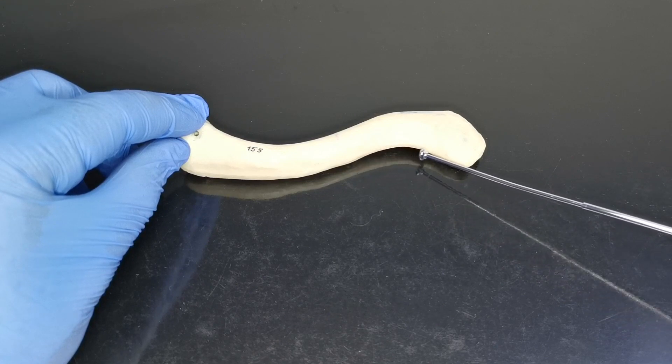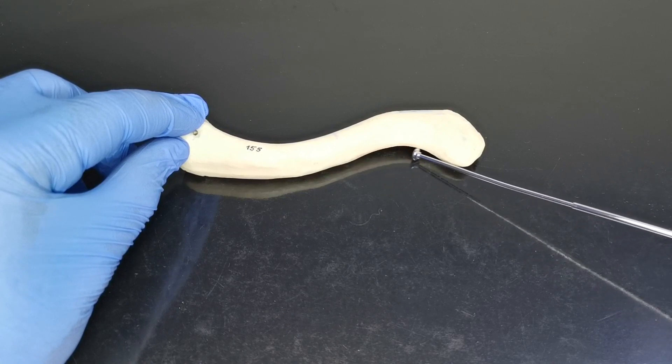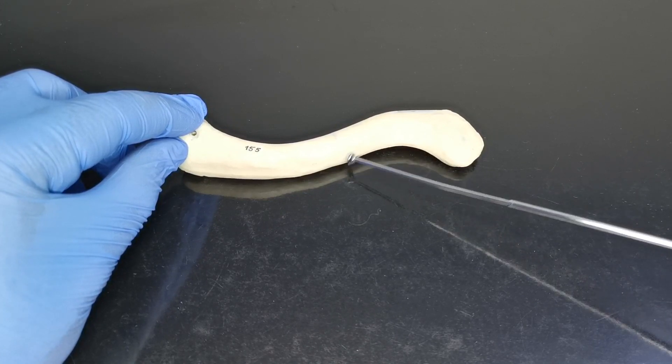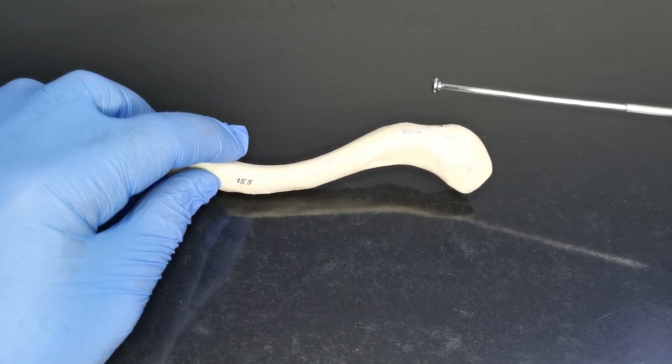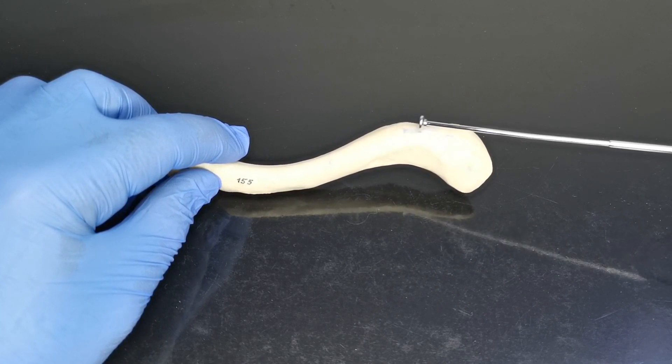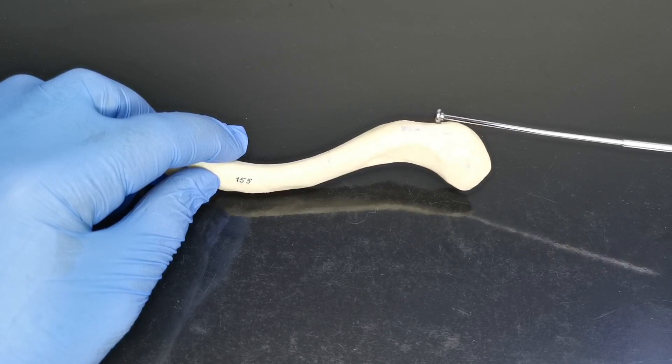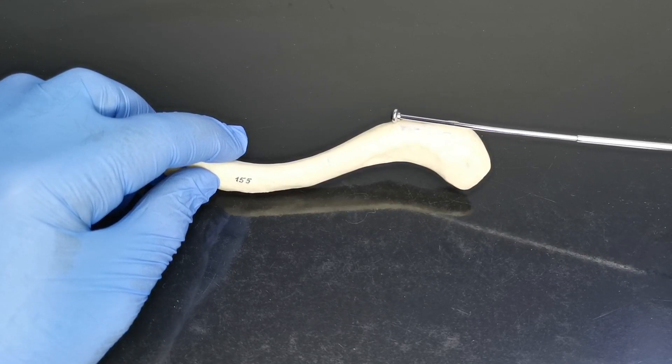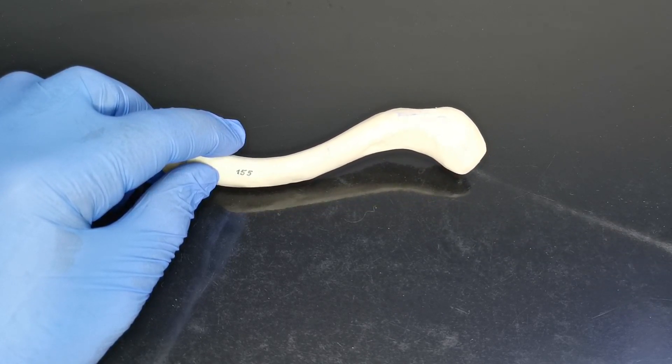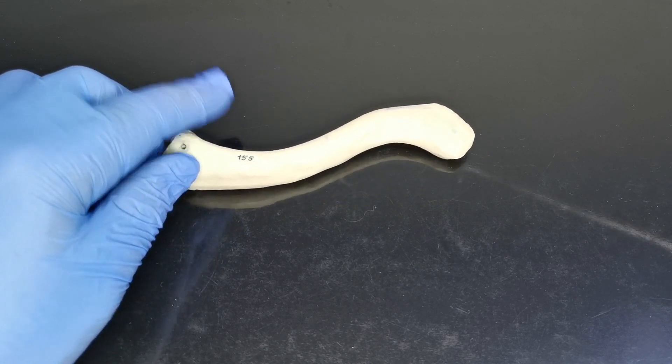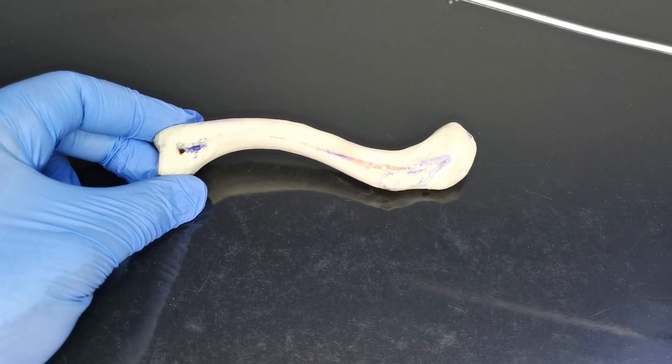In the concave area anteriorly is the origin of the deltoid muscle. While posteriorly is the insertion of the trapezius muscle. Here is the insertion of the trapezius muscle.